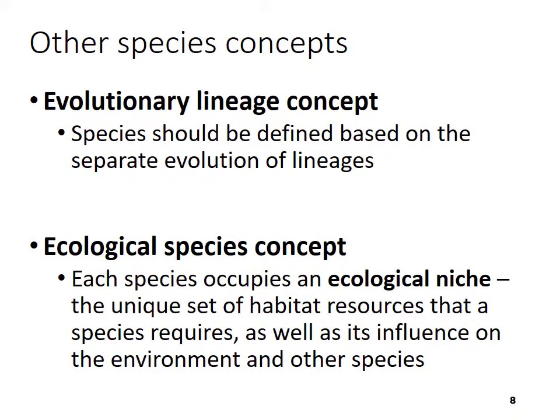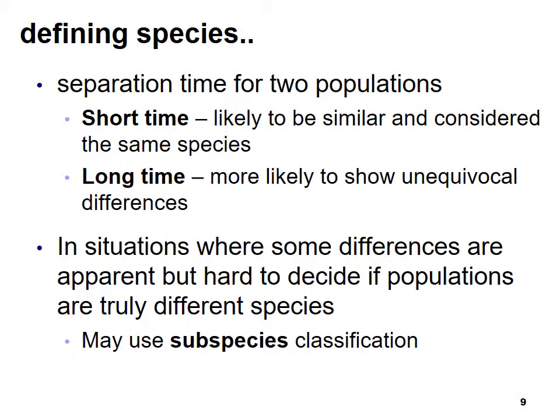When defining species, sometimes they're close but not quite the same. If we look at the separation time for two populations — if they've only been separated a short time they're likely to be considered the same species, but if separated for a longer period they're more likely to show substantial differences. In situations where it's hard to determine if they're truly different species, you could use a subspecies classification.